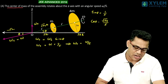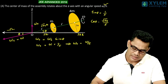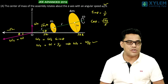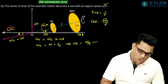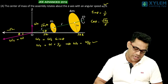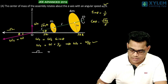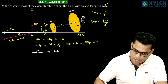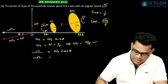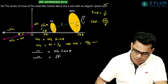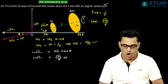That matches the first option exactly — the center of mass rotates about the z-axis with angular speed omega by 5. So option A is correct. Before moving on, let me also find the net angular speed capital omega, which will be useful later. Capital omega equals omega_s × cos(theta) = omega × root(24)/5. Keep this value in mind as it will be needed in future options.